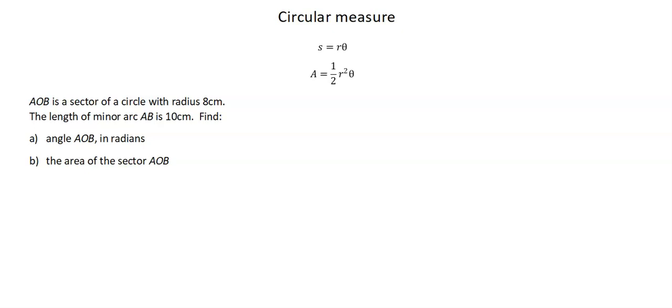We read AOB is a sector of a circle with radius eight centimeters. The length of minor arc AB is 10 centimeters. Find A, angle AOB in radians. B, the area of the sector AOB. Let's create a diagram to begin.